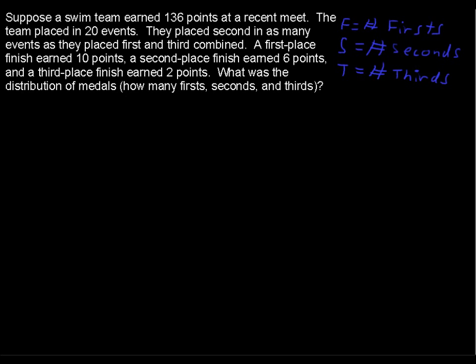Now let's build some equations. Right off the bat, we're told that they placed in 20 events. So the number of first place medals plus the number of second place medals plus the number of third place medals equals 20. We're also told that they earned 136 points total, and they got 10 points for a first, 6 points for every second, and 2 points for every third. So 10 points times the number of firsts plus 6 points times the number of seconds plus 2 points times the number of thirds will equal that grand total of 136.